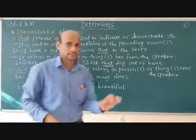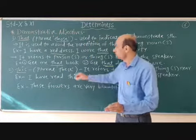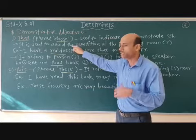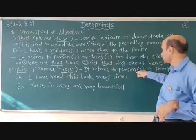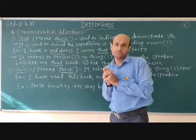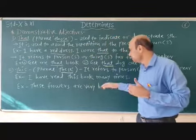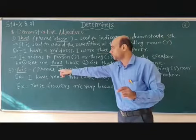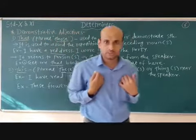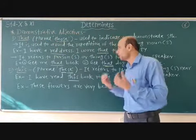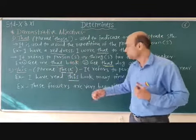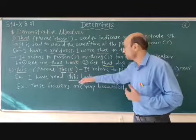Coming to the next one: 'this'. The plural of 'this' is 'these'. We have seen that 'that' is used to indicate something far away from the speaker. Now 'this' refers to a person or thing near the speaker. For example: 'I have read this book many times' — the book is with me, close to me, near me. It is not far away, so we use 'this'.